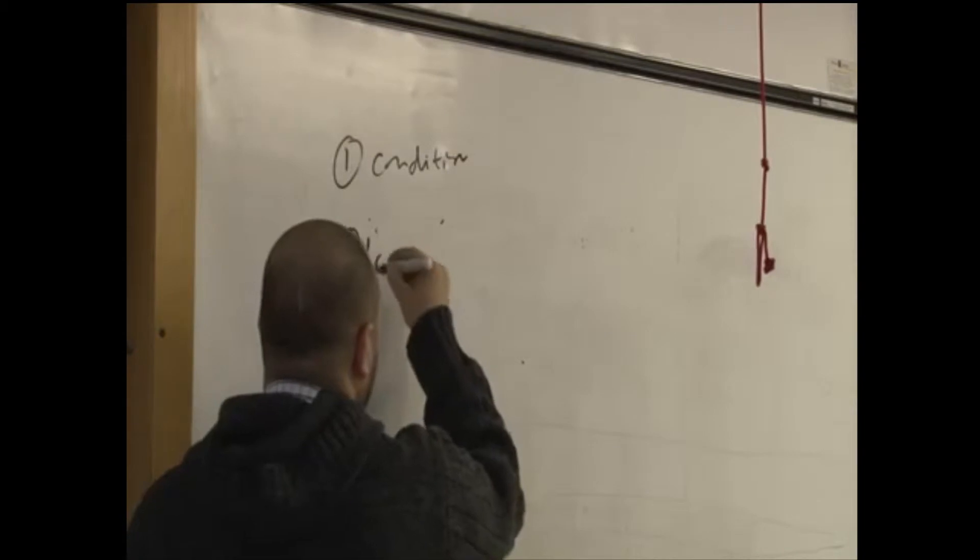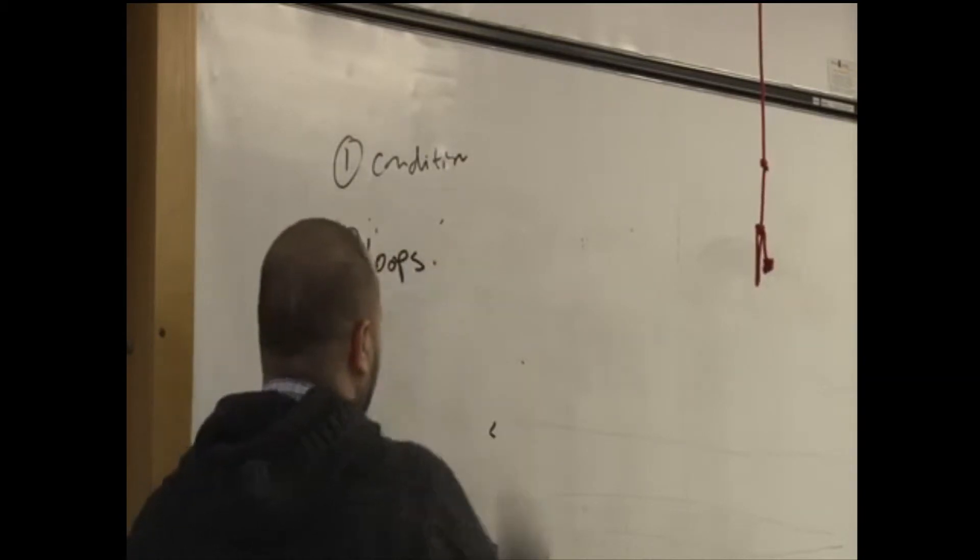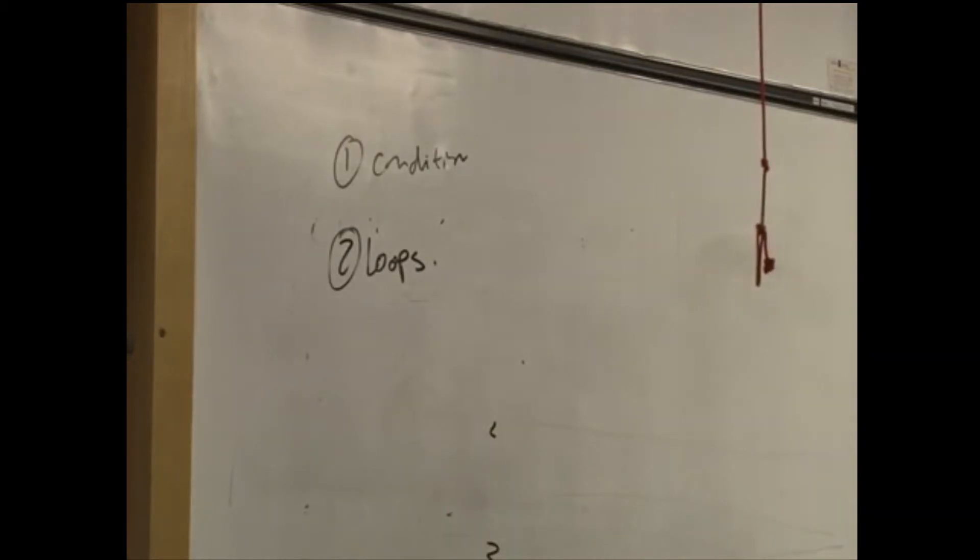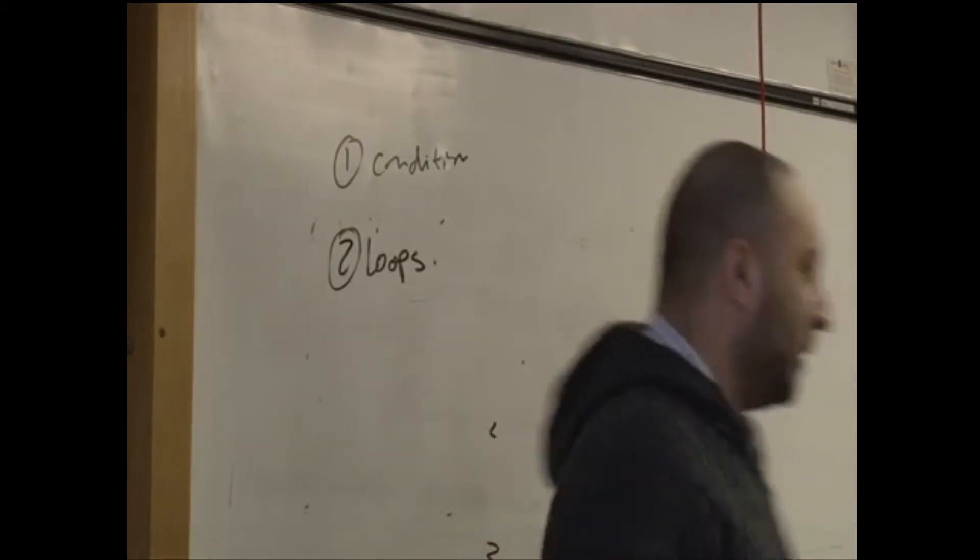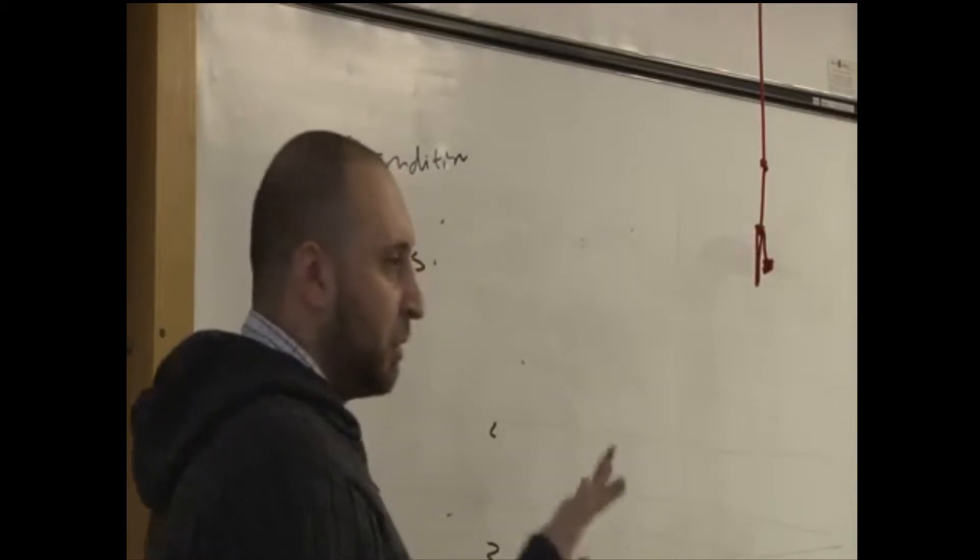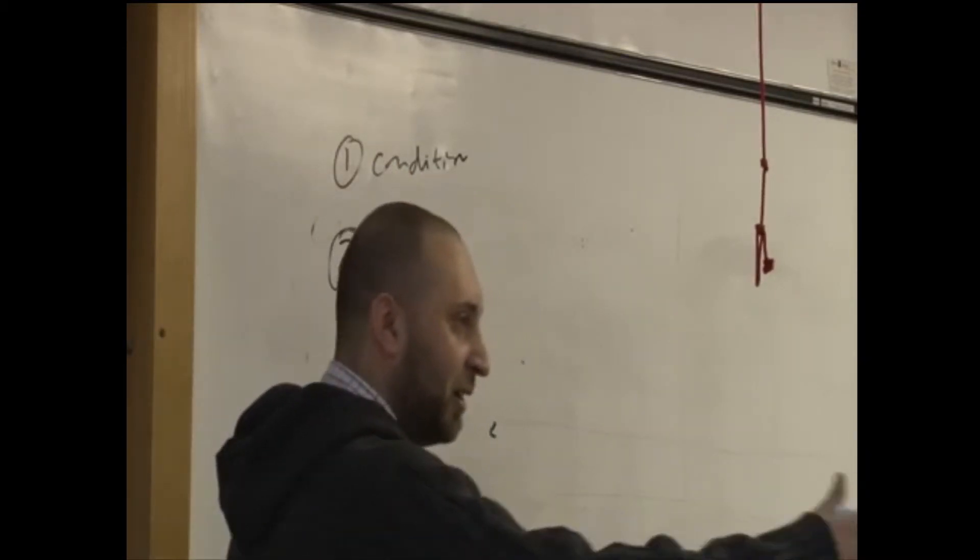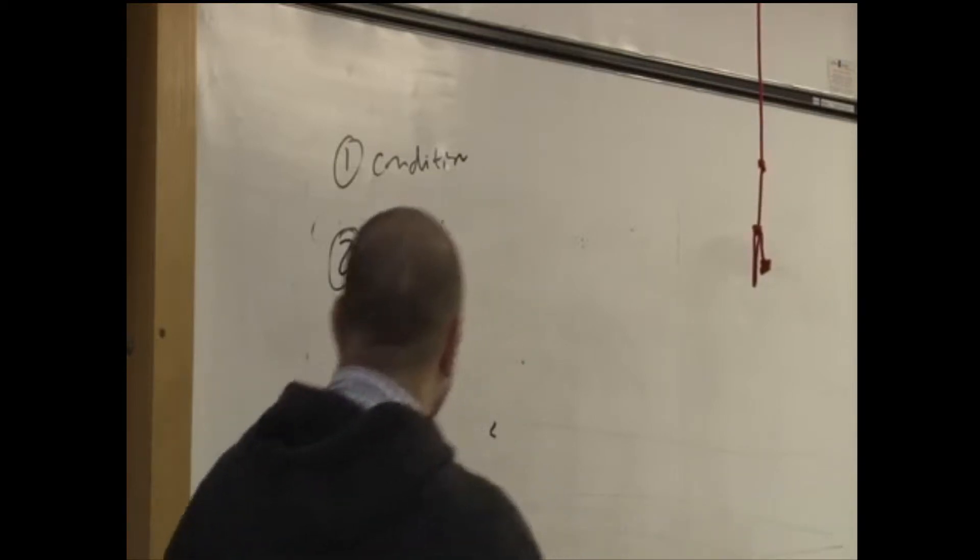The second thing, you've got loops. Now, loops is when computers are really good at repeating something a number of times. There's four different types of loops, maybe there's more, I'll try to remember. Four different loops.